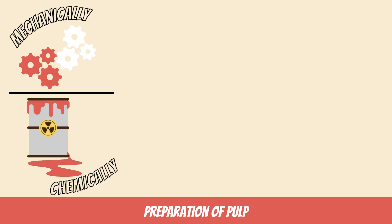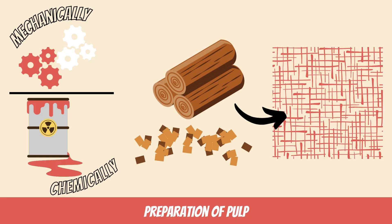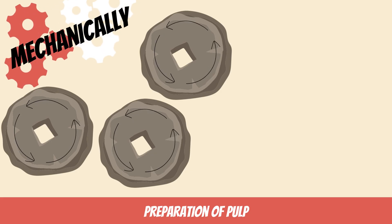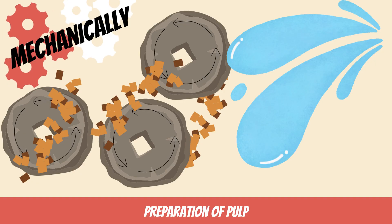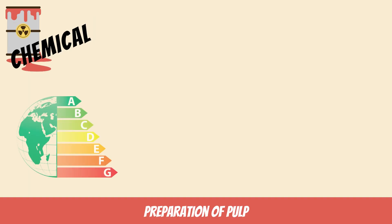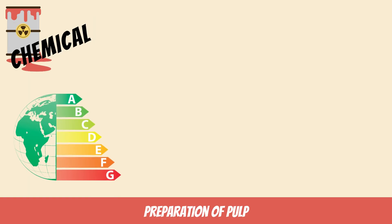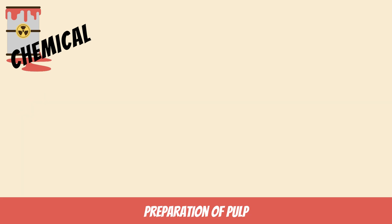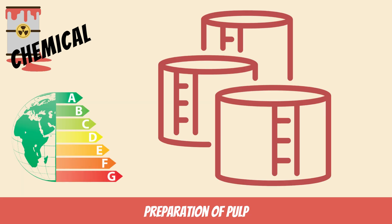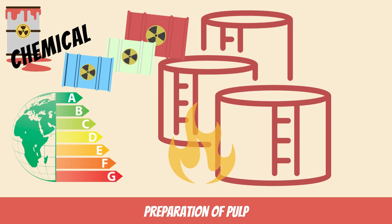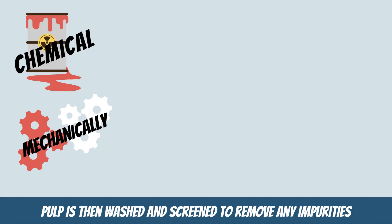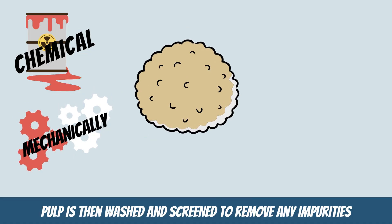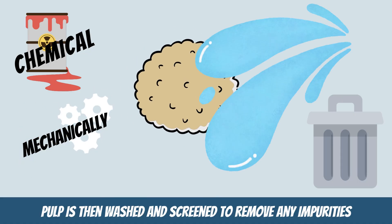Both methods extract fibres from the logs, which is what makes up the pulp. Within the mechanical method, grindstones are used to tear the wood fibres apart in water. Whereas the chemical method, which is more widely used as it is more energy efficient, uses large tanks full of various chemicals. These tanks pressure cook the wood chips into a mushy fibre mass.